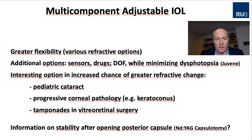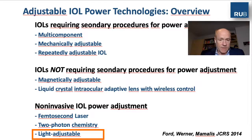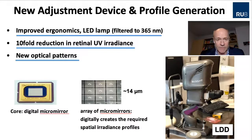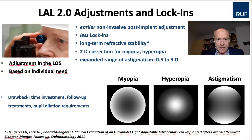Still, information on stability after opening the posterior capsule is lacking. The second option is light adjustable lens technology, which is available as a three-piece foldable silicone IOL with a 6mm optic, 30mm overall diameter, ranging from 10 to 30 diopters with UV protection, and a sub-2.7mm injection with an improved LDD device in ergonomics and UV irradiance. It allows earlier post-implant adjustments, fewer lock-ins, a three-diopter correction for myopia and hyperopia, and an expanded range of astigmatism treatment from 0.5 to 3 diopters.